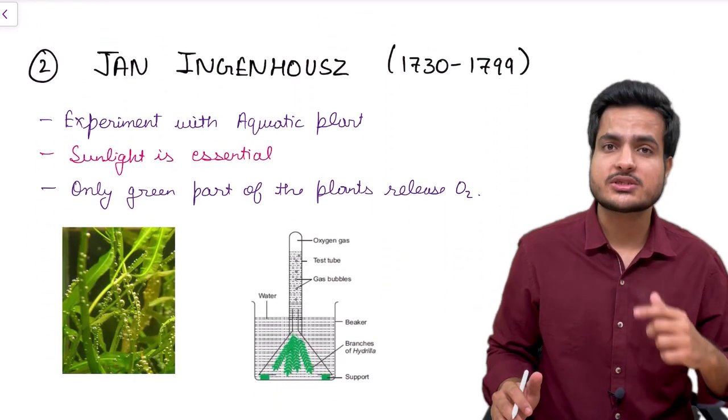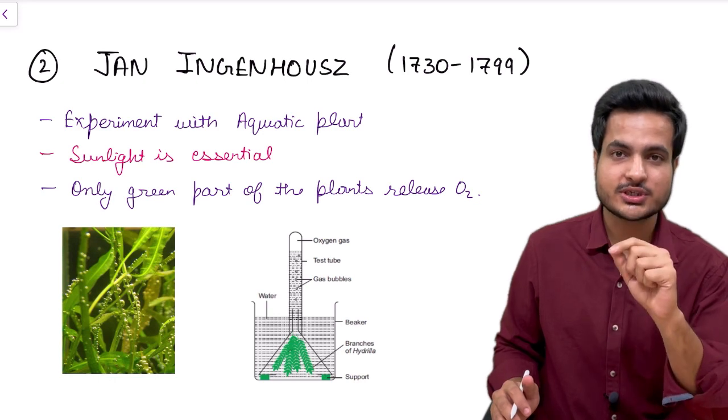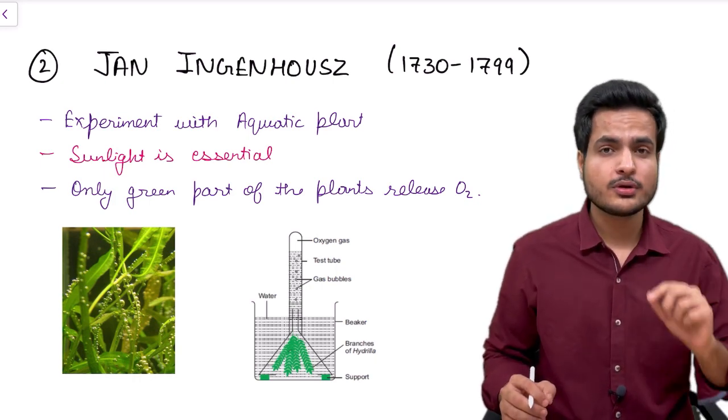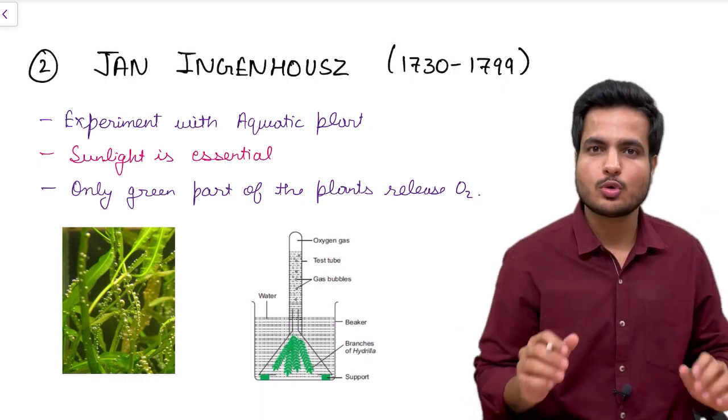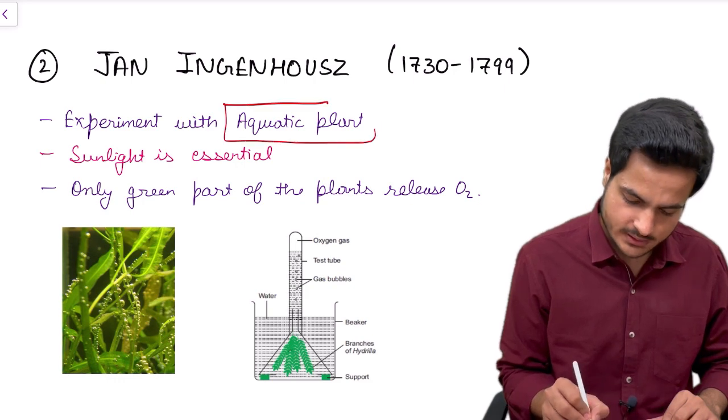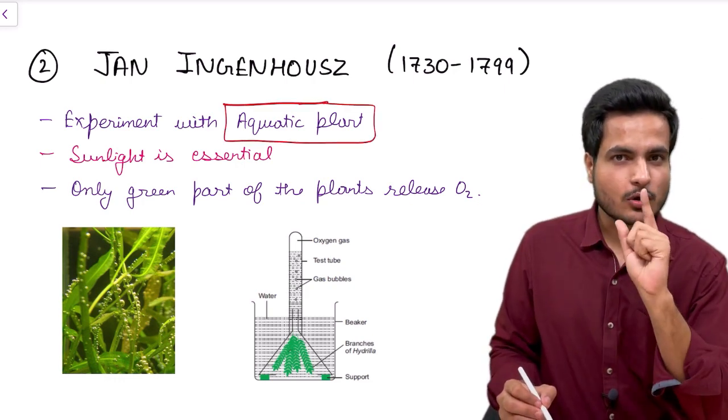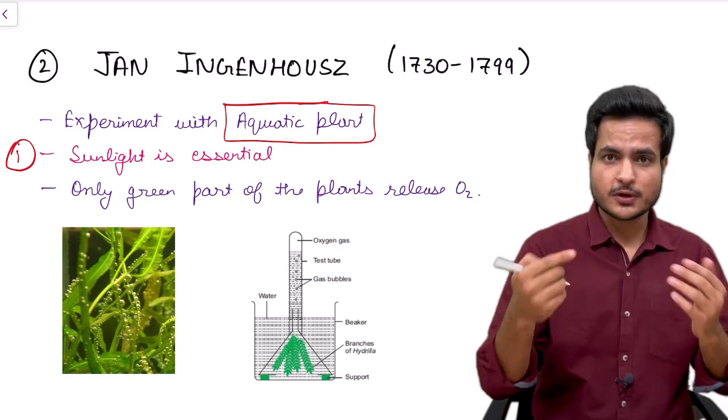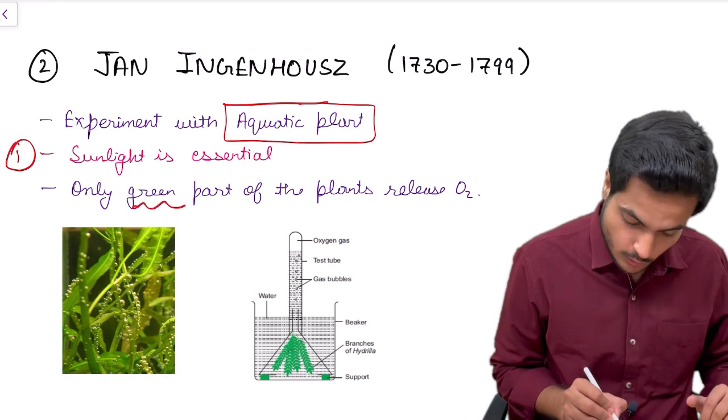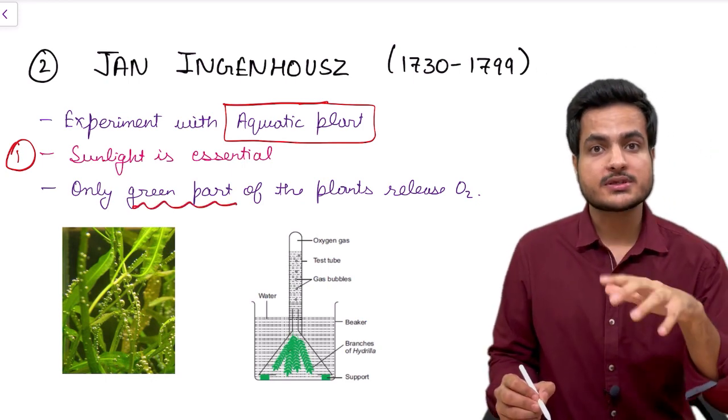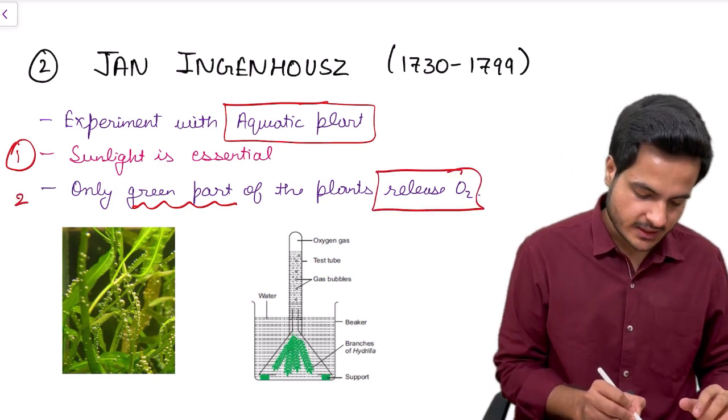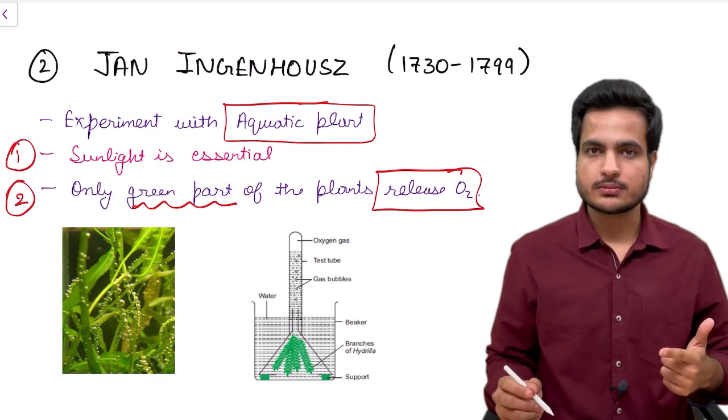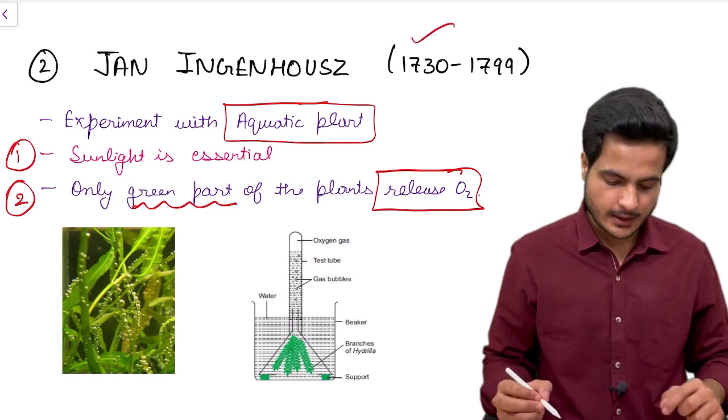Now coming to the second scientist whose name is Jan Ingenhousz. From his name you need to remember engine. A car engine requires oxygen for combustion of fuel. Therefore Jan Ingenhousz's experiment was somehow centered to oxygen. He did his experiment on aquatic plants and he said that they will release oxygen only in the presence of sunlight. So his first statement was that sunlight is essential for this process, the process which we now know as photosynthesis. And he also said that the green part is only the part of plant which is releasing oxygen.